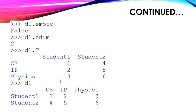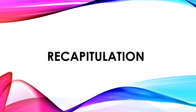The last attribute is T (transpose). Transpose means rows are converted into columns and columns into rows. Using d1.T, the columns cs, ip, physics become rows, and the rows student1 and student2 become columns. Here we have covered two major topics of Python Pandas: first is series, and second is data frames — how to create them and what are the differences between series and data frames.